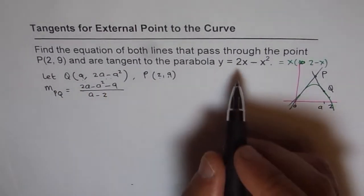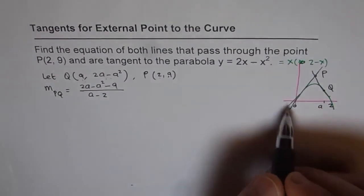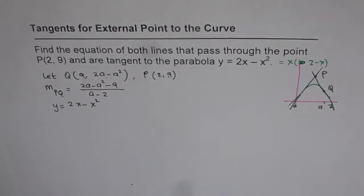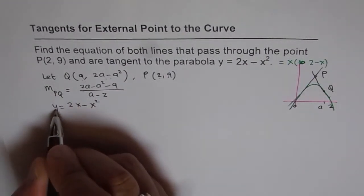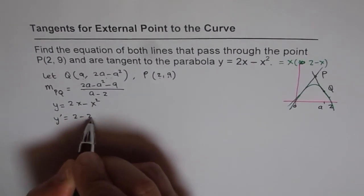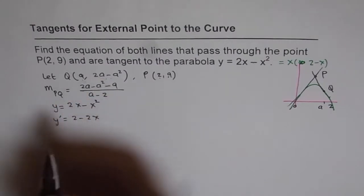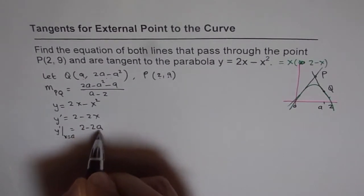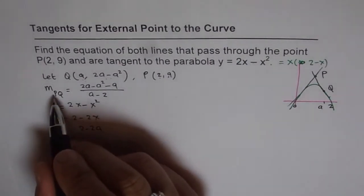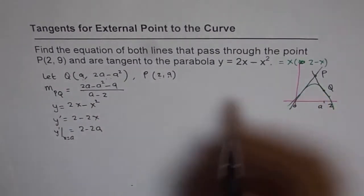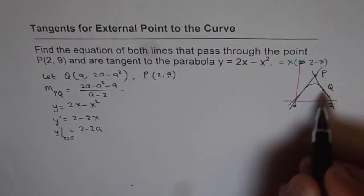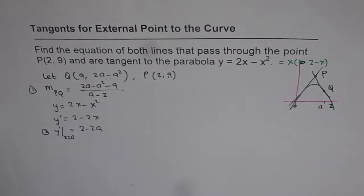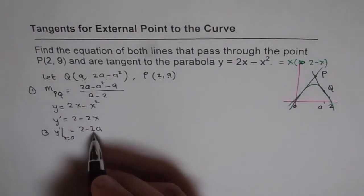We are also given the function y = 2x minus x squared. The slope at any point is y dash, which is 2 minus 2x. So y dash at x equals a will be 2 minus 2a. Now since the slope between P and Q, and the slope from the derivative at point Q where x equals a, must be the same, these two expressions should be equal.